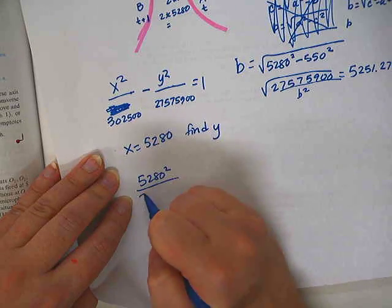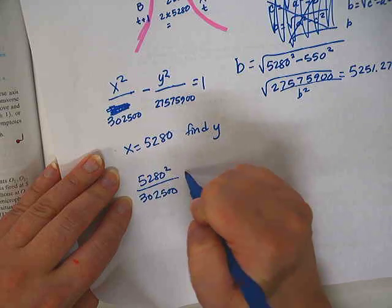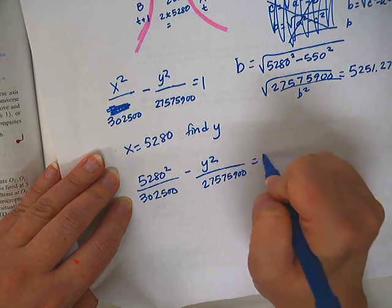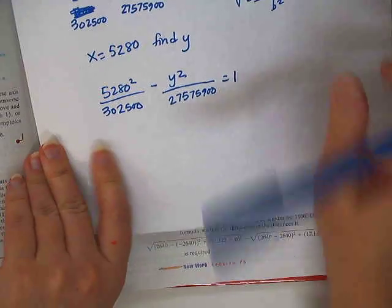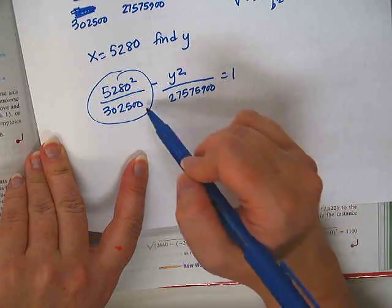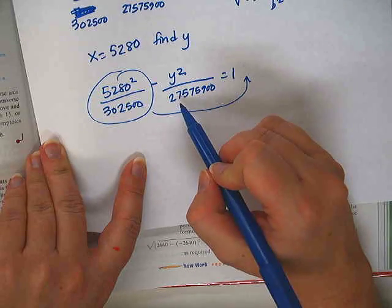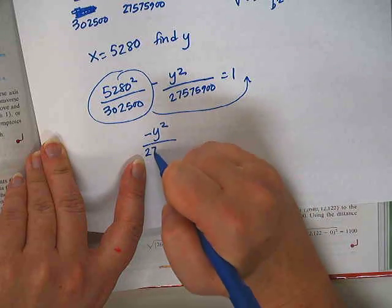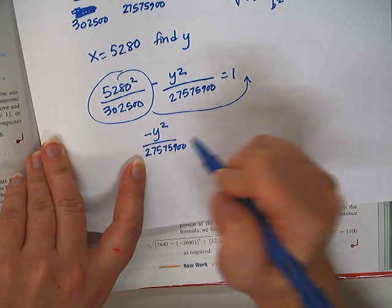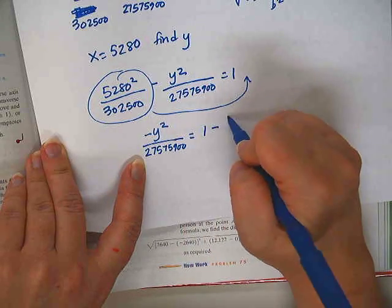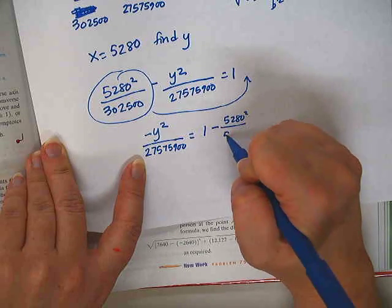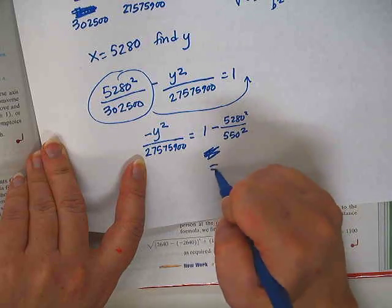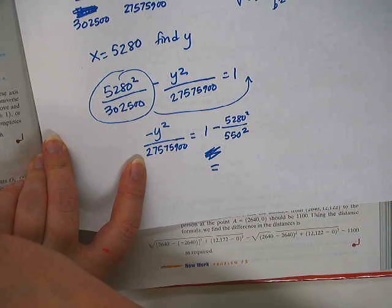We want to find the y value, and that will tell us how far away the fireworks are from a person at point A. So we plug that in 5280 squared divided by 32500 minus y squared over 27575900 equals 1. So to solve for y, we're going to take this thing and subtract it from the 1 over here, and then cross multiply probably, right?